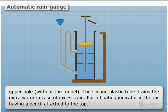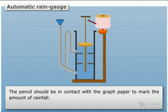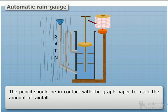Put a floating indicator in the jar with a pencil attached to the top. The pencil should be in contact with the graph paper to mark the amount of rainfall.